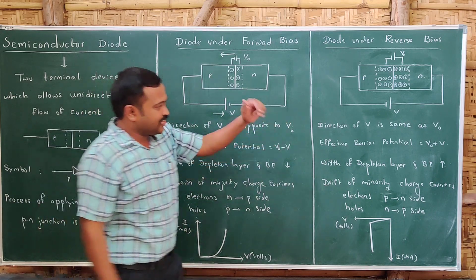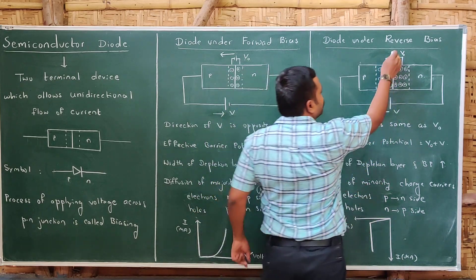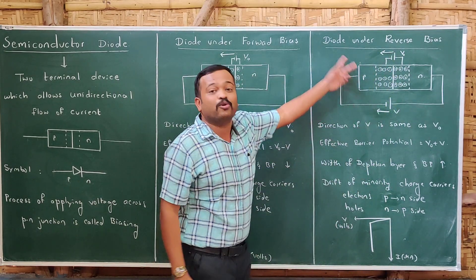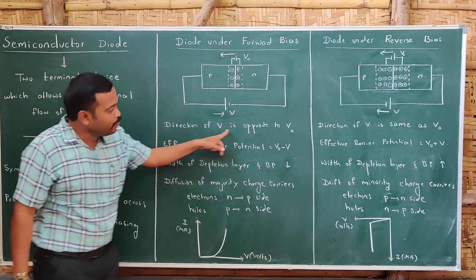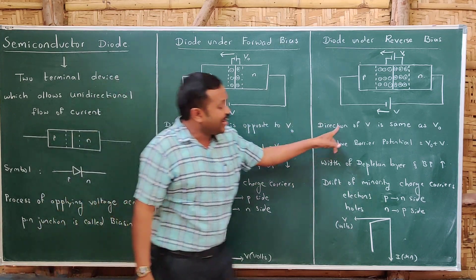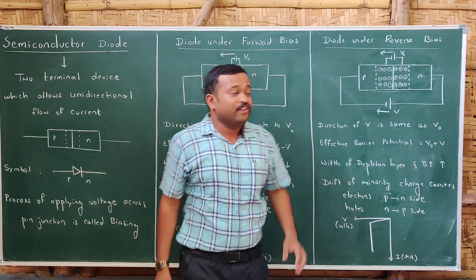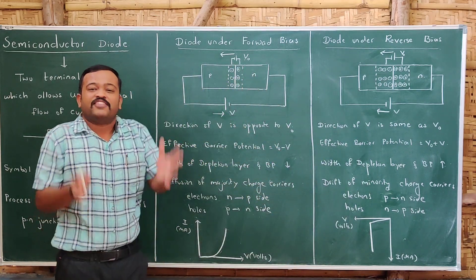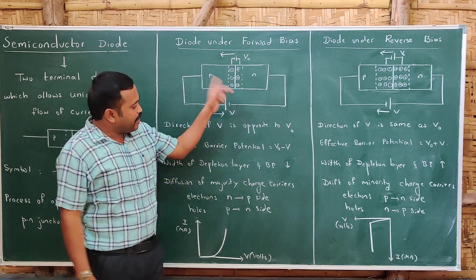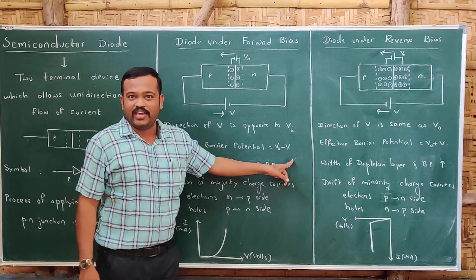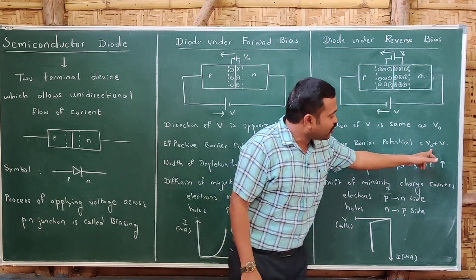In forward bias, the direction of applied voltage is opposite to the barrier potential. So if you apply voltage opposite to barrier potential, the barrier potential decreases, and the effective barrier potential will be V₀ minus V. In reverse bias, the direction of the applied voltage is the same as the barrier potential, so the effective barrier potential will be V₀ plus V.